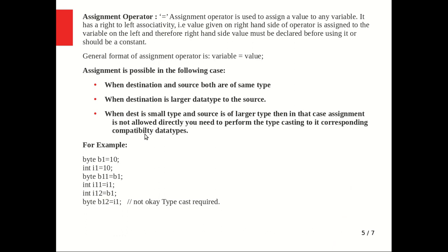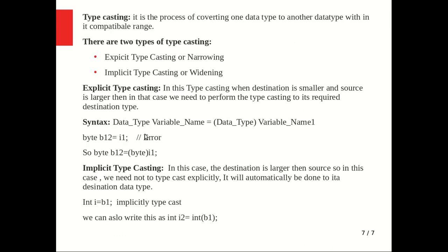Next is typecasting. Typecasting is the process of converting one data type to another data type within its compatibility range. There are two types of typecasting: explicit type casting, also known as narrowing, and implicit type casting, also known as widening. Explicit typecasting is required when the destination is smaller and the source is larger than the destination.